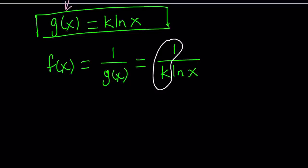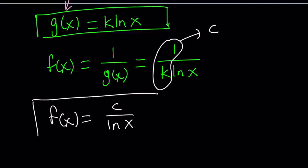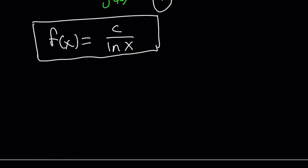So let's replace 1 over k with c, c being a constant like k. So f of x from here can be written as c over ln x, where c is a real constant. Now, we can go ahead and plug it in the original problem and check our work. Let's go ahead and do that.